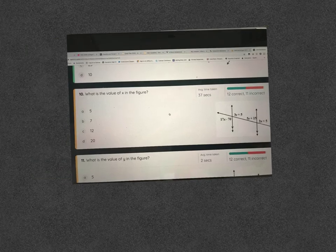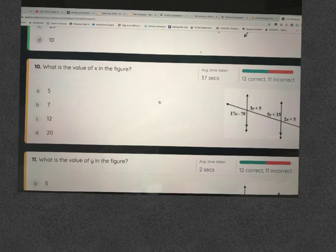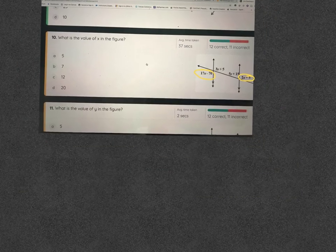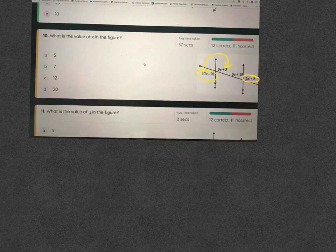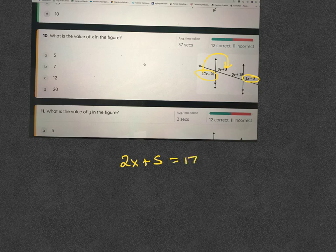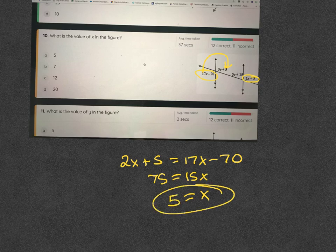This one says, what's the value of X in the figure? You had a bunch of different, there's Y's and X's. The relationship with these two would be what? No, it's alternate exterior. Alternate exterior. Luckily, you would have done the same thing. Oh, you used these two? Those two are alternate exterior, which means 2X plus 5 should equal 17X minus 70. 15X would equal 75. And X equals 5.